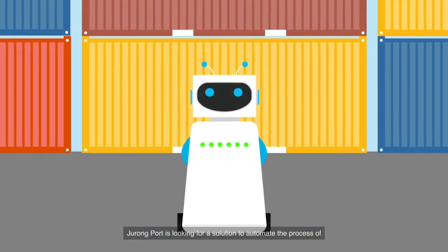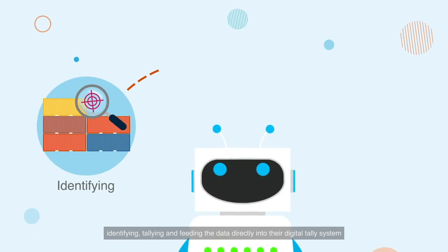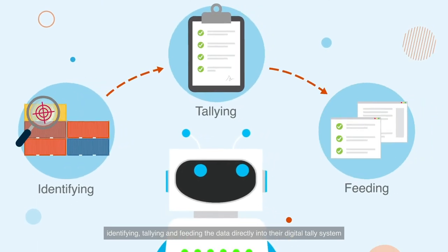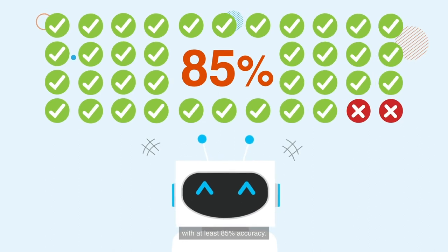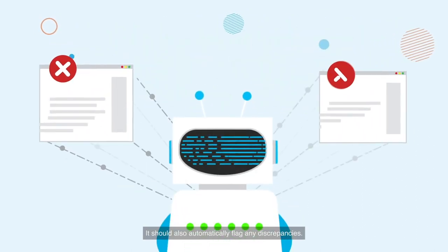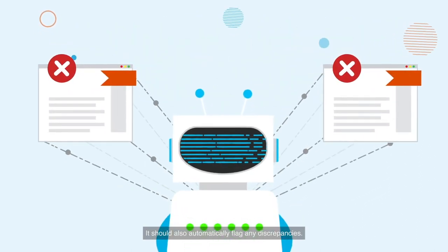Jurong Port is looking for a solution to automate the process of identifying, tallying, and feeding the data directly into their digital tally system with at least 85% accuracy. It should also automatically flag any discrepancies.